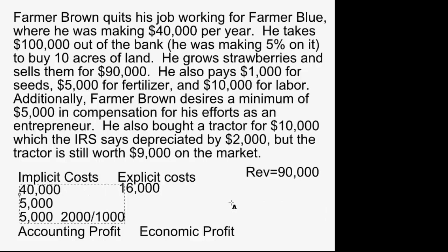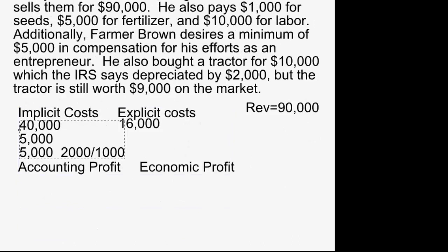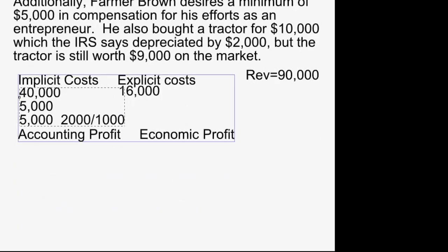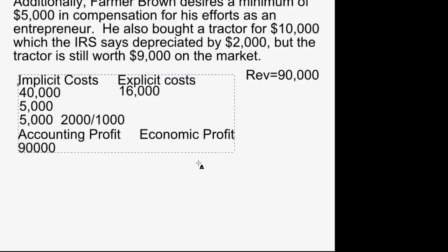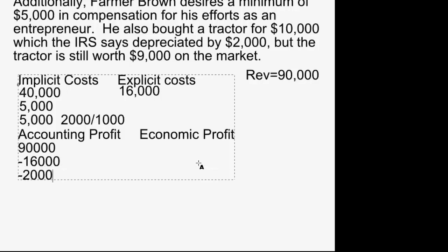Now that we've gone through all the numbers, we can calculate what an accountant would say the profit is versus what an economist would say. An accountant takes total revenue of $90,000 and subtracts explicit costs. Accountants mostly measure money as it flows away from a business. So they subtract the $16,000 in explicit costs and the $2,000 in accounting depreciation: $90,000 minus $18,000 equals $72,000 in accounting profit.